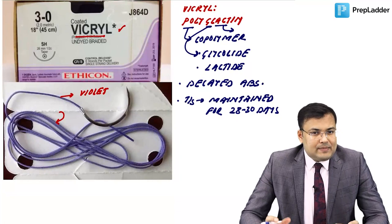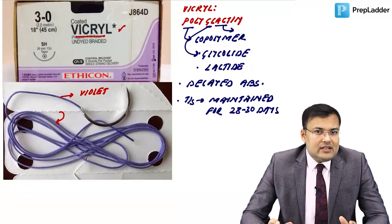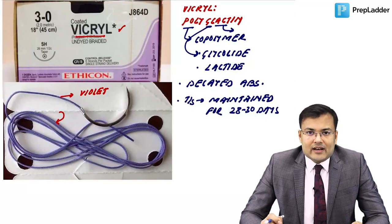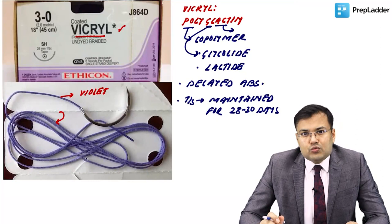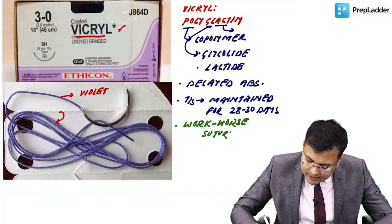Vicryl is considered the workhorse suture for general surgeons, frequently requested during laparotomies and resection anastomosis procedures. It is a delayed absorbable suture, which is why it is used in organs with stone formation tendency.